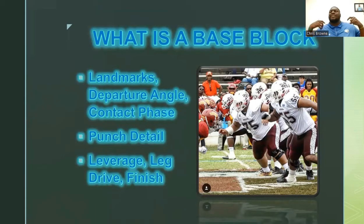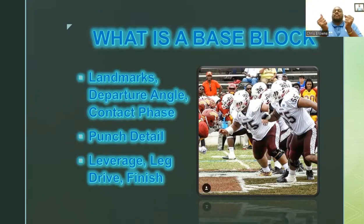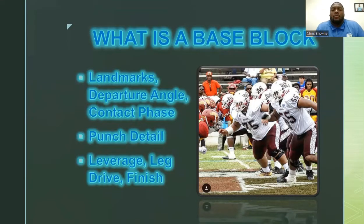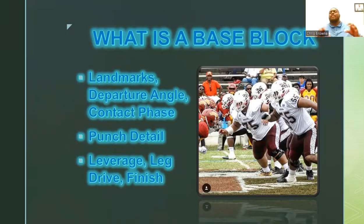The punch detail is the tricep punch. We've talked about this multiple times here on Trail O-Line Play. My landmark is under the armpits of the defender — I'm striking for my tricep, shooting up in a forklift motion to execute my base block punch detail. I have to time up my punch while protecting my chest, which is why I always advocate and teach a tricep punch in the base block run scheme.